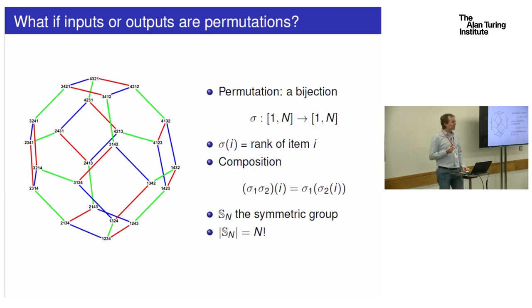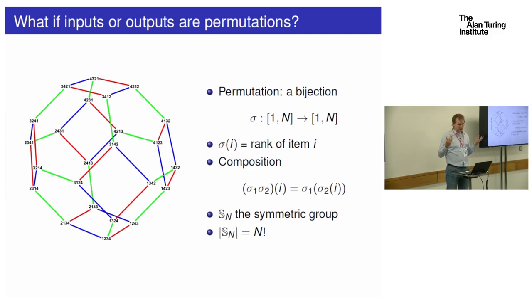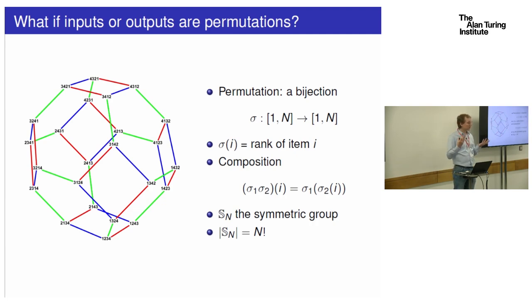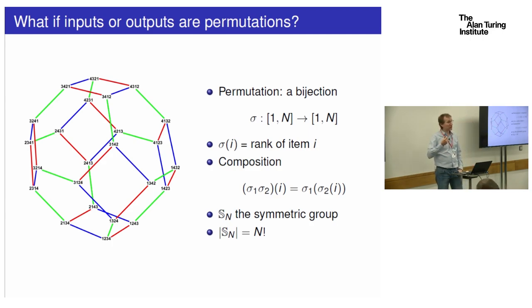I will use the notation sigma for the permutation, where by convention I define sigma of i as the rank of item i. So imagine that you have a list of items — the permutation is a way to encode a ranking of these items by performance, or by size, or by whatever. So sigma of i would be the rank of item i.